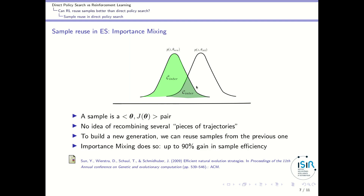The samples at the intersection between both populations can be reused, saving a lot of samples. To build a new generation, you can reuse samples from the previous generation — specifically those at the intersection of the two populations. The importance mixing paper shows you can gain 90% in sample efficiency when the two populations overlap a lot, which is often the case. Importantly, in direct policy search a sample is a pair of policy parameters and their performance — there is no notion of trajectory pieces, just a general performance value. This makes a huge difference compared to policy gradient methods.